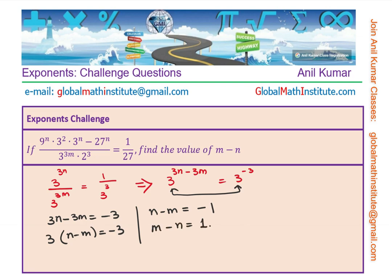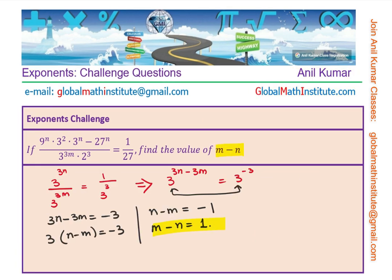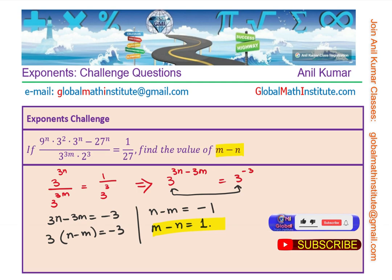So n minus m is equal to minus 1, or equivalently m minus n is equal to 1. We get our result that m minus n is actually equal to 1. That is how you can solve this particular question using the laws of exponents.